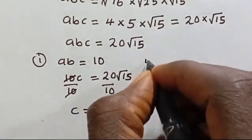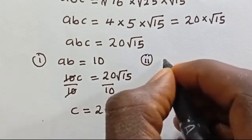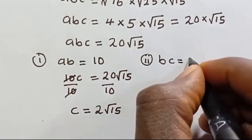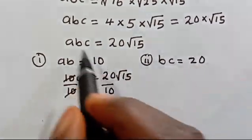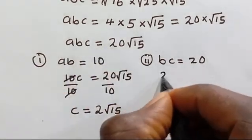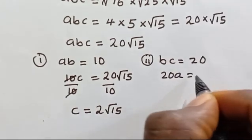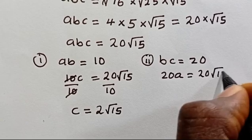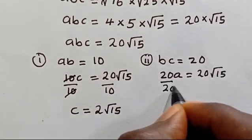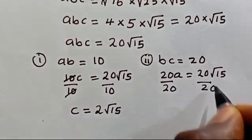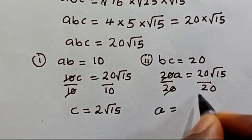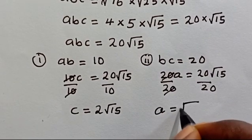Case 2: bc equals 20. Substituting into abc equals 20 root 15, we get 20a equals 20 root 15. Dividing both sides by 20, we find a equals root 15.